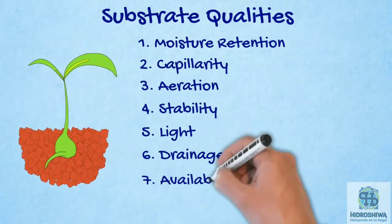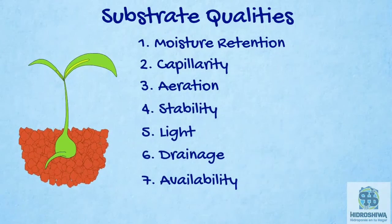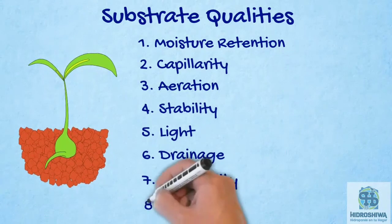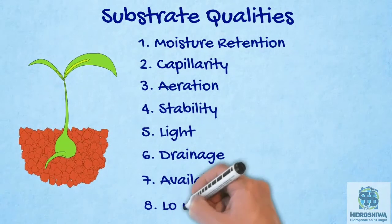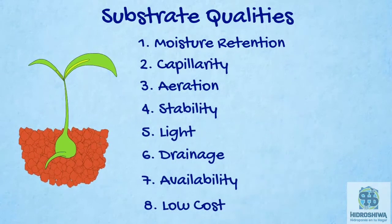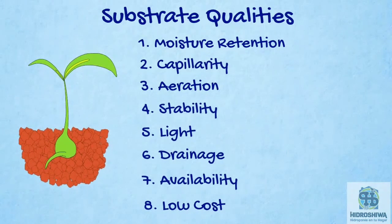The seventh property is availability. This is a logical condition, but sometimes it is not taken into account when selecting the substrate. We must ensure that it is readily available and inexpensive. Generally, this factor determines even before other conditions the substrate to be used. That is why it is advisable to make a budget without sacrificing the quality of the product.